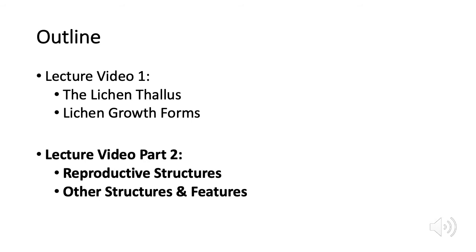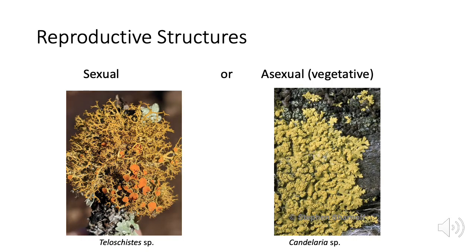If you flip through a lichen ID book, you're going to find that there are many, many more structures with names than we have time to cover here, and many variations on the ones we will cover. I'm just going to focus on the most important ones for identifying common lichens. The first thing to know is that lichens can reproduce either sexually through fungal spores or asexually through pieces of the thallus that contain both fungus and photobiont, breaking off together to form a new lichen. Species are sometimes defined by what reproductive structures they have.